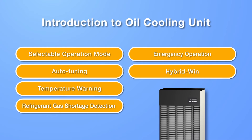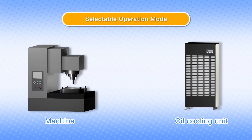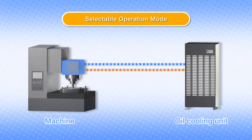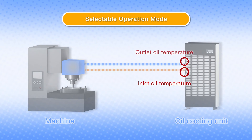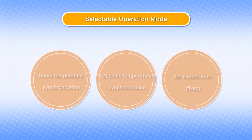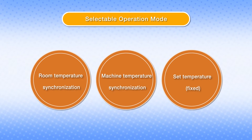We'll now introduce the main functions of Daikin Oil Cooling Units. Daikin Oil Cooling Units feature operation mode selection function as standard. The temperature control target can be selected from three locations and three target temperatures can be set. You can choose the best operation mode depending on the characteristics of the machine.